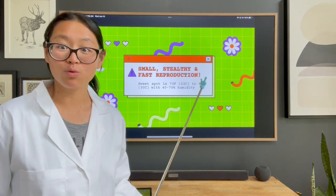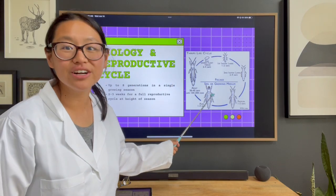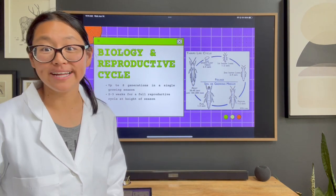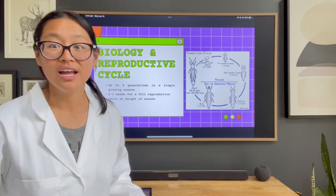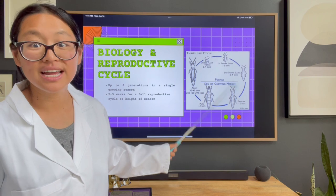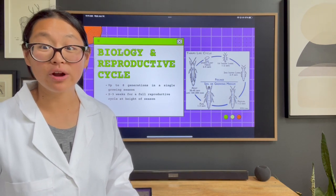Let's talk about the reproductive life cycle. This graphic is really important because it helps us understand the timing of their reproductive cycle. Thrips start off as an egg — after conditions above 50°F are met, they start laying. They spend about two to four days as eggs and then become larvae. Then they have another phase where they're just hanging out as larvae before they become the adult phase, at which point they are able to reproduce.